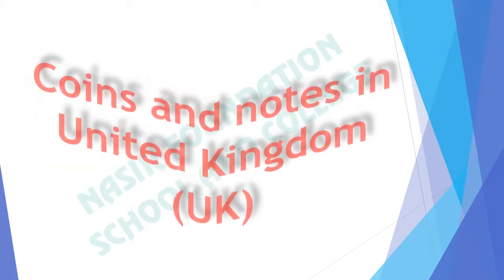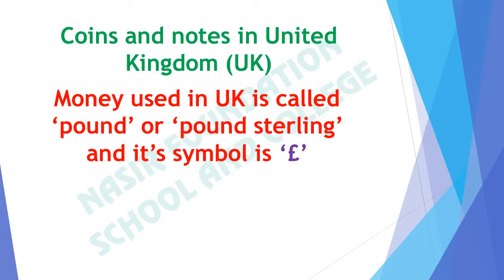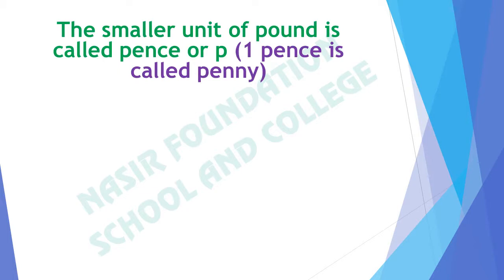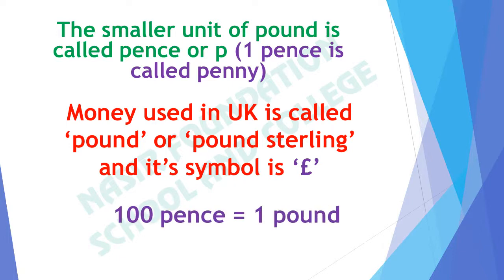Now let's look at coins and notes in the United Kingdom or UK. Money used in UK is called pound or pound sterling, and its symbol is £. The smaller unit of pound is pence, and 1 pence is called penny. 100 pence makes 1 pound — just as 100 Paisas make 1 rupee in Pakistani currency.